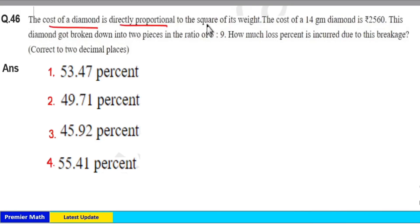The cost of a diamond is directly proportional to the square of its weight. The cost of a 14 gram diamond is ₹2560. This diamond got broken down into two pieces in the ratio 5 to 9. How much loss percent is incurred due to this breakage?